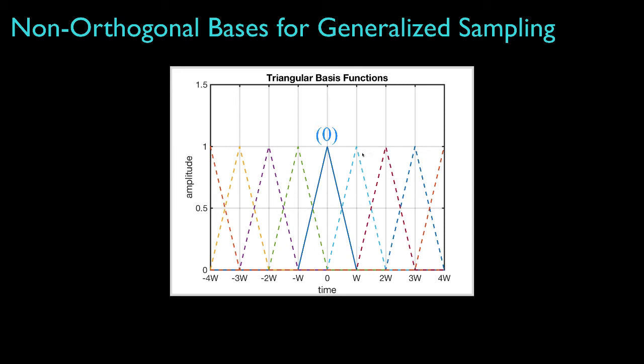Each additional basis function would be obtained by shifting the fundamental basis function to the right or to the left. The function that is centered above w, for instance, would correspond to the index k equal to 1. The triangle function centered on negative 2w would correspond to k equal minus 2.